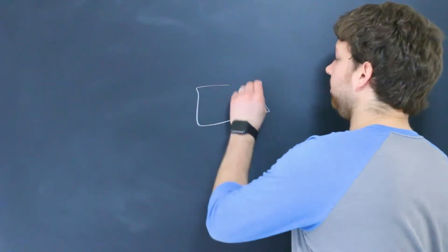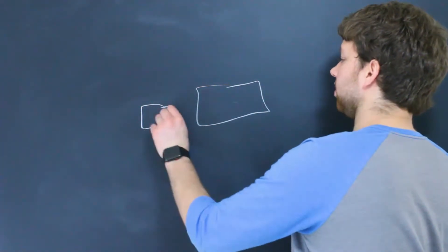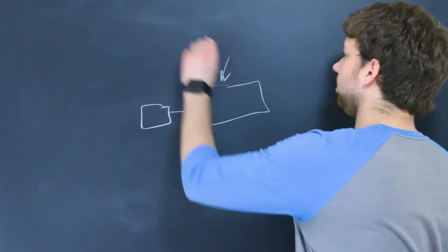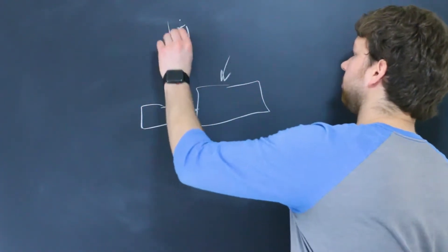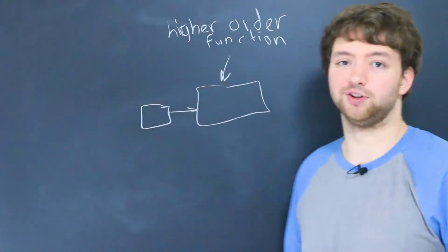Sometimes there will already be functions that exist that we will give a function to. Other times, we ourselves are going to create a function to take another function. The concept where we create a function to take a function — the bigger function in that situation is known as a higher-order function. So back in our example, the function that took another function, this one here, is known as a higher-order function. That's just a term you might want to familiarize yourself with.